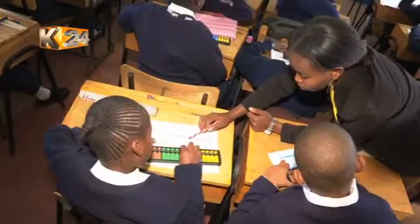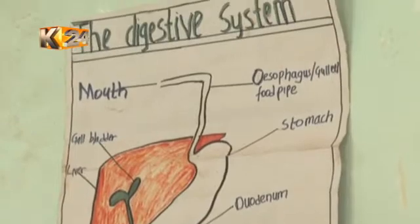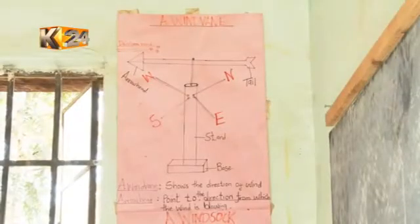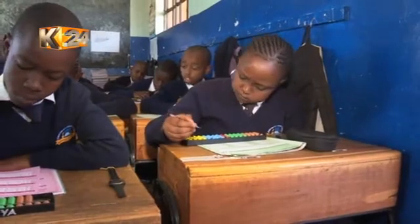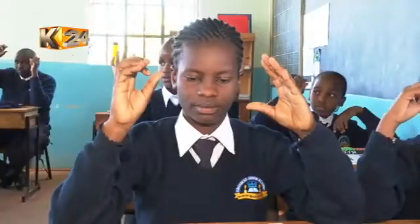The abacus learning program is fully in line with the competency-based curriculum, and learners also do well in other learning areas. The notion out there that abacus is purely about teaching mathematics is not accurate — mathematics is used as a vessel. Once a child is good in mathematics, it translates to any other subject.